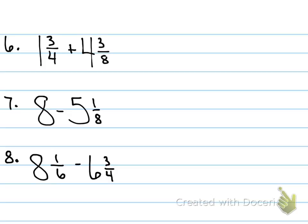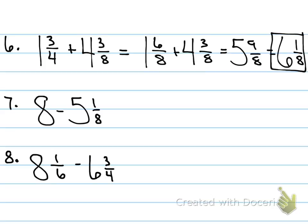Okay, so 1 and 3 fourths plus 4 and 3 eighths. I need to find an LCD. 5 and 9 eighths. But that can't be my final answer because it's improper. So 6 and 1 eighth.